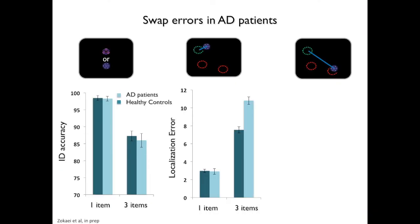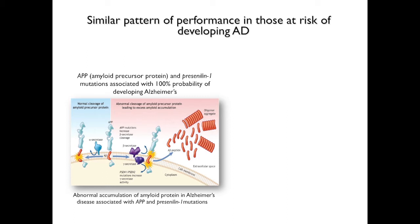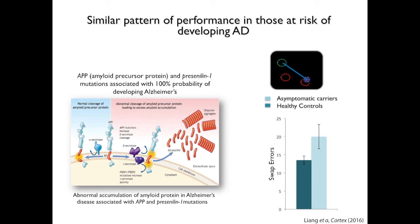We call these kinds of errors 'swap errors' — it's not that they've completely forgotten about the items, they've just forgotten which item went where. When we look at these errors, we see that patients with Alzheimer's disease or mild cognitive impairment are making more of these swap errors. Colleagues in our group have also shown a similar pattern of increased swaps in patients with familial Alzheimer's disease — individuals who have a 100% chance of developing Alzheimer's disease but don't have it yet.